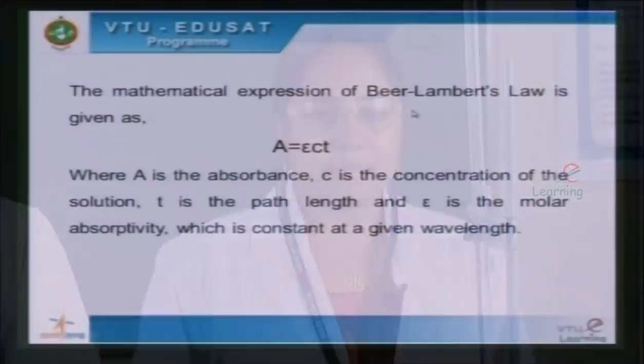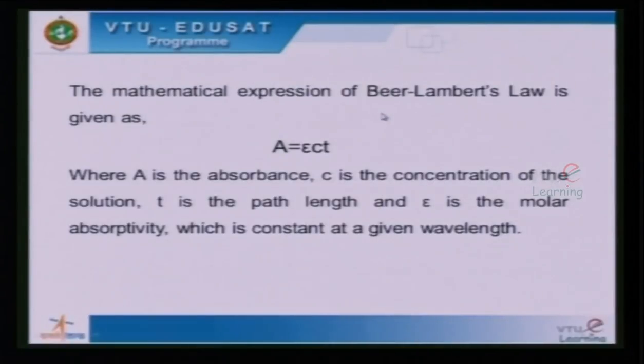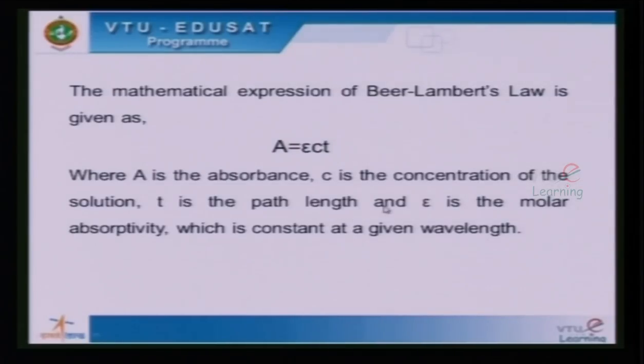The mathematical expression of Beer-Lambert's law is given as A = εct, where A is the absorbance, c is the concentration of the solution, t is the path length, and ε (epsilon) is the molar absorptivity, which is constant. The instrument used to measure the absorbance of a colored solution is called a colorimeter.